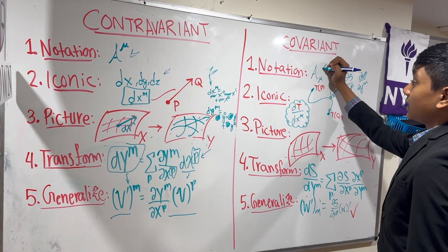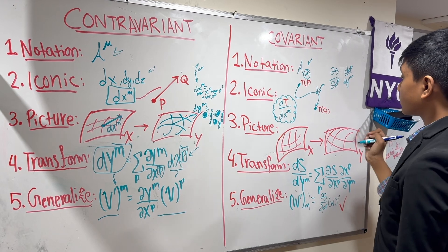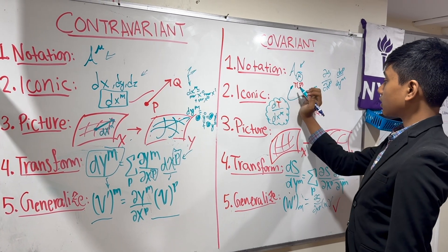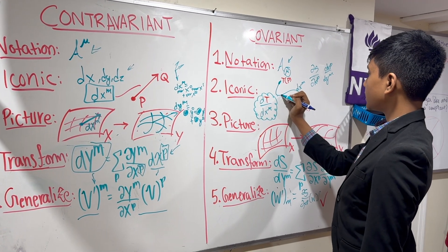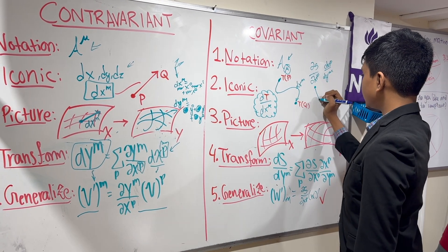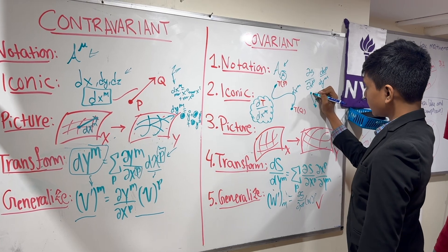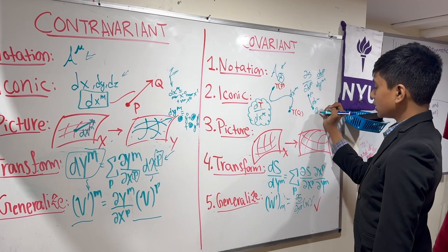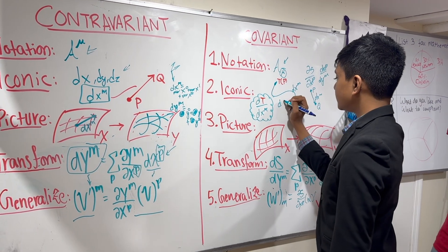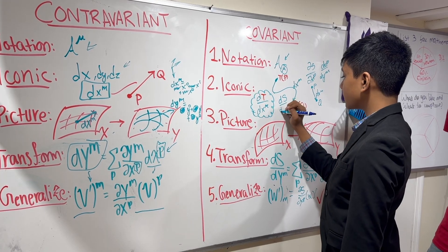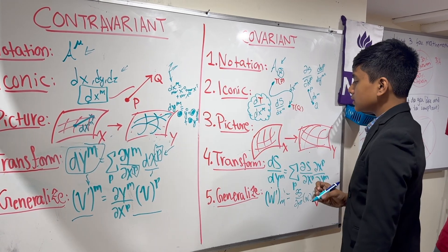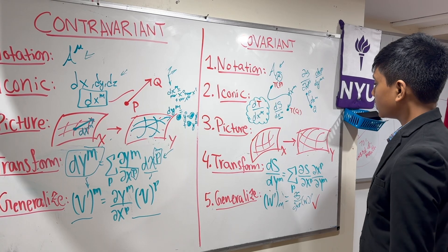Our notation here is we use a subscript for covariant components. An iconic way to show this is by taking a little change in our basis vector dxm between two points in a scalar field. Then we have d of our scalar field divided by dxm, which is a contravariant component.